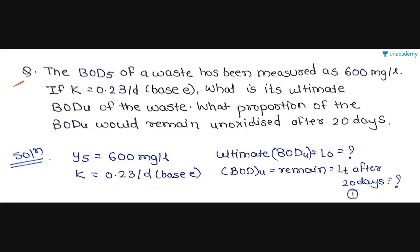Let's start with the first question: the BOD₅ of a waste has been measured as 600 mg per liter. If K is equal to 0.23 per day (base e), what is the ultimate BOD of the waste, that is BOD_U? And what proportion of BOD_U would remain unoxidized after 20 days? Given: BOD at 5 days is 600 mg per liter. We need to find the ultimate BOD (L₀) and the BOD remaining (LT) after 20 days. K is given as 0.23 per day (base e).